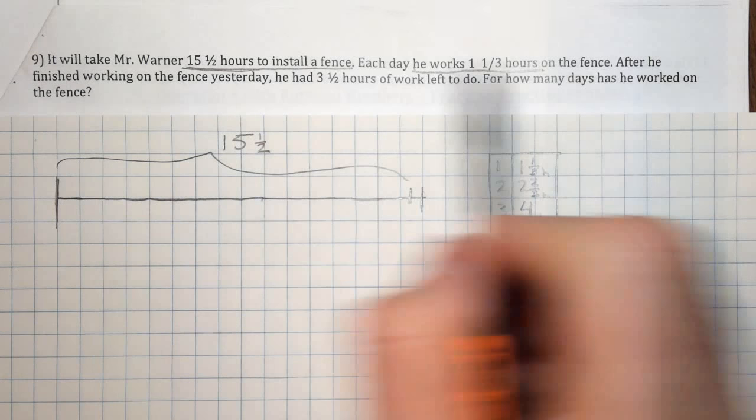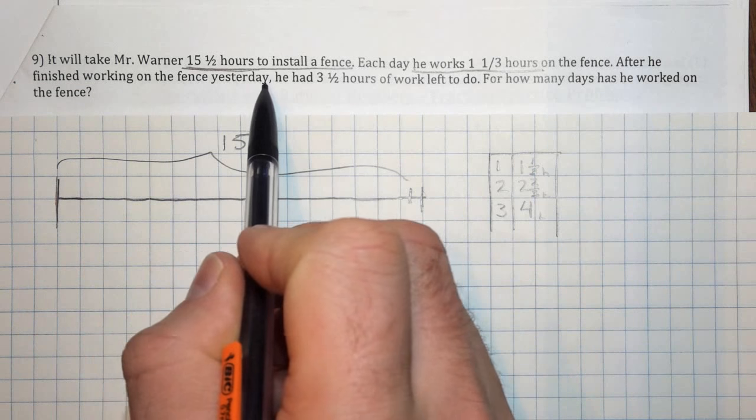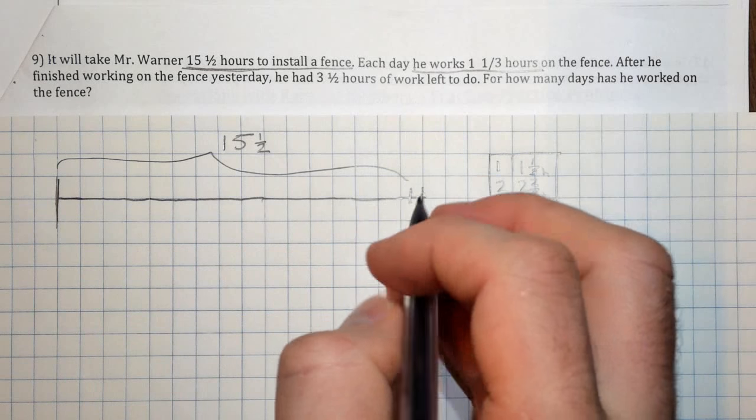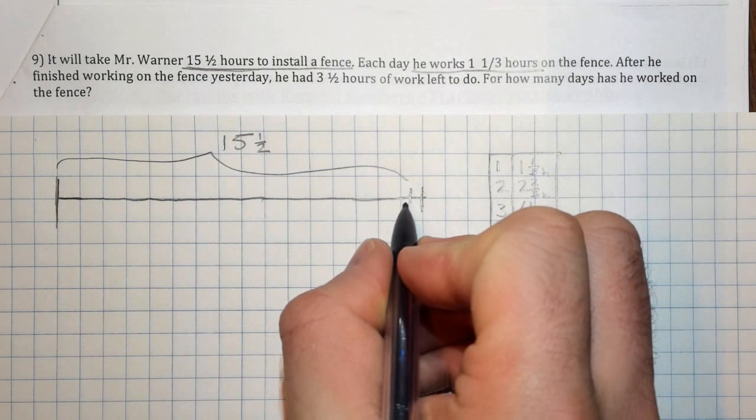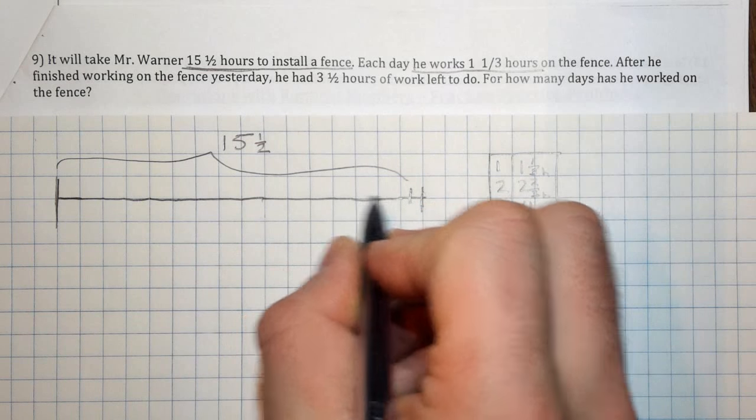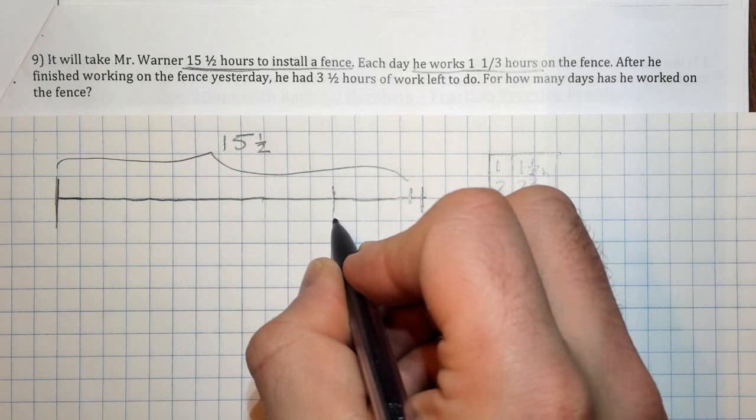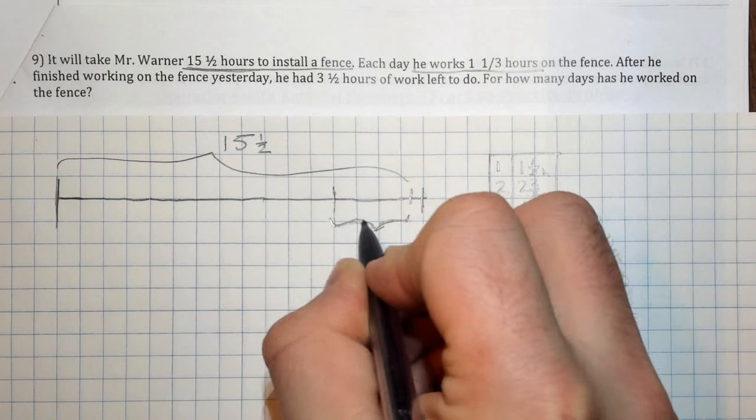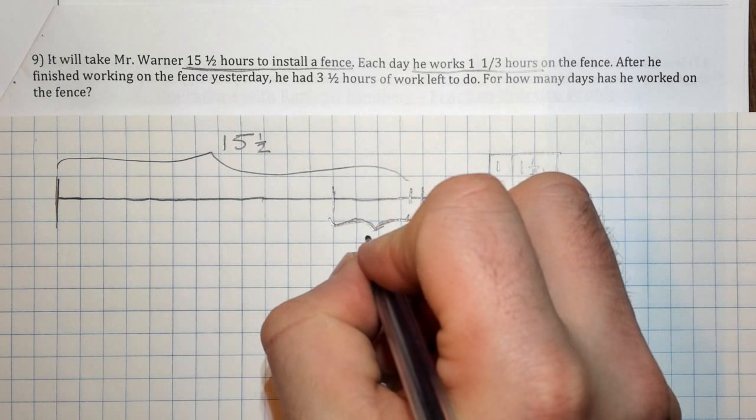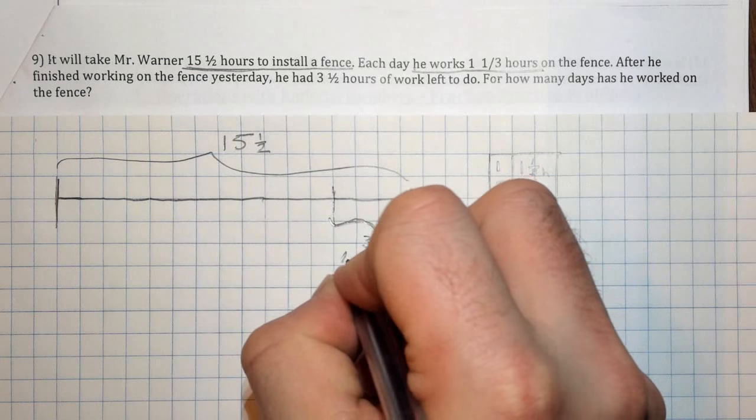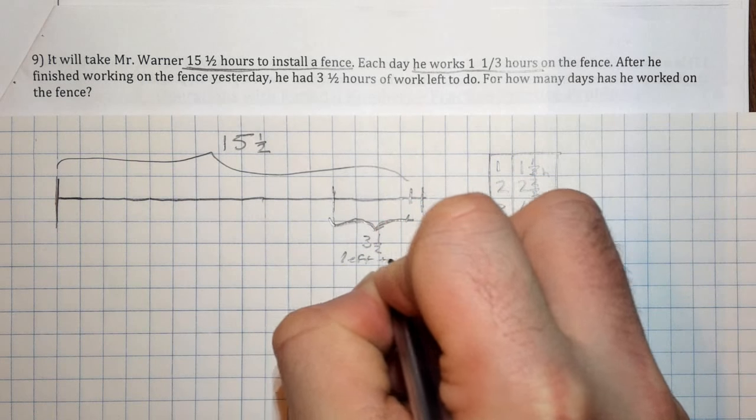Now, after he finished working on the fence yesterday, he had three and a half hours of work left to do. So that puts us at three and a half left to do. So he is right here. This is how much work he has left to do.